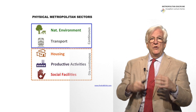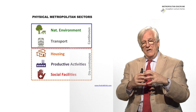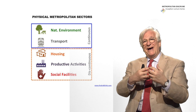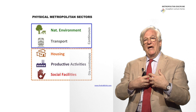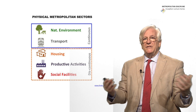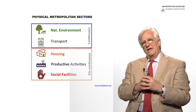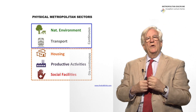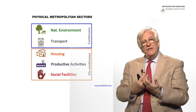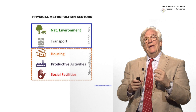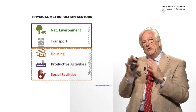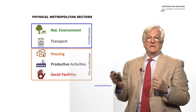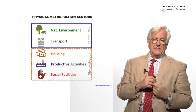The environment as well. You cannot have a park separated from another park. You must have biodiversity, and the flow of that biodiversity requires that the parks — the system from national parks to urban parks — have to be as continuous as possible. On the other hand, we have the discontinuous systems, which is housing, productive activities, and social facilities.